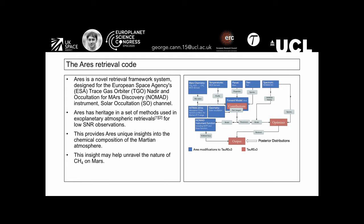So the aforementioned points are the motivation behind the ARIES retrieval code. ARIES is a novel retrieval framework system, and it's designed for the TGO, in particular for NOMAD and for solar occultation measurements. ARIES has heritage in methods used in exoplanetary atmospheric science, in particular for low signal-to-noise observations. This provides ARIES with unique insight into the chemical composition of the Martian atmosphere, which potentially could help unravel the nature of methane on Mars.